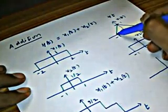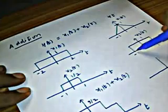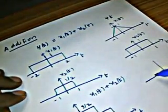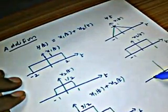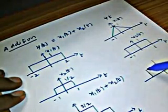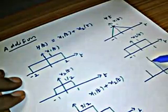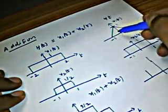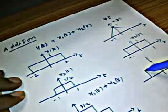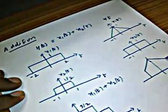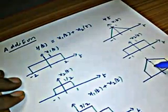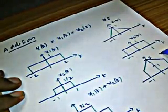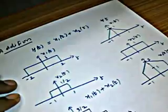At minus 1, the amplitude of the triangle signal is 0, while x2 of t has a discontinuity of amplitude 1. So the sum has a sudden jump of 1 at minus 1. From minus 1 to plus 1, adding the rectangle of amplitude 1 and the triangle gives a shape that rises from 1 to a peak of 2 at t equals 0 and returns to 1 at plus 1. Beyond plus 1, the sum is 0. The name of this signal is x1 of t plus x2 of t.